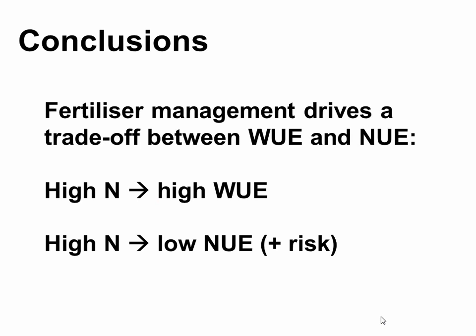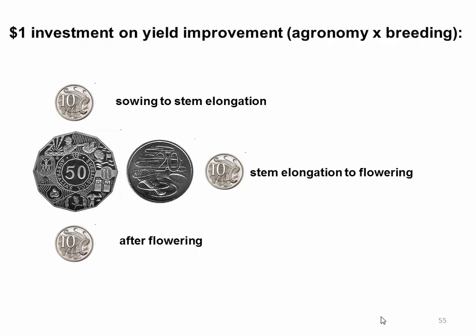To finish, water and nitrogen cannot be separated — we need nitrogen to have high water use efficiency, but with high nitrogen input there is a low efficiency of return for nitrogen and associated risk. To summarize the idea of critical periods: if given one dollar to improve wheat yield through agronomy or breeding, that's how I would invest it. It's important to get the crop established and to have a good finish, but the pre-flowering window — stem elongation to flowering — is where we will have the greatest return on investment. That's where we need to focus.